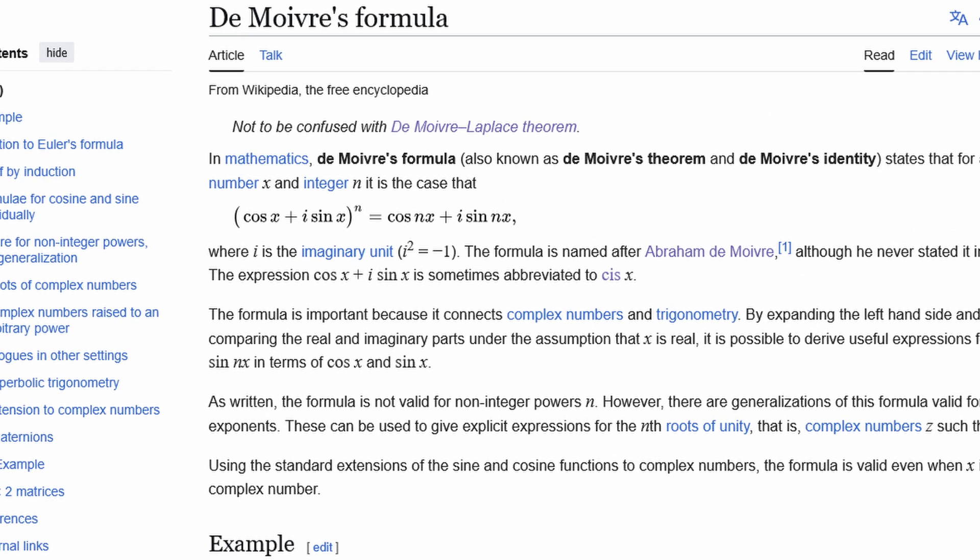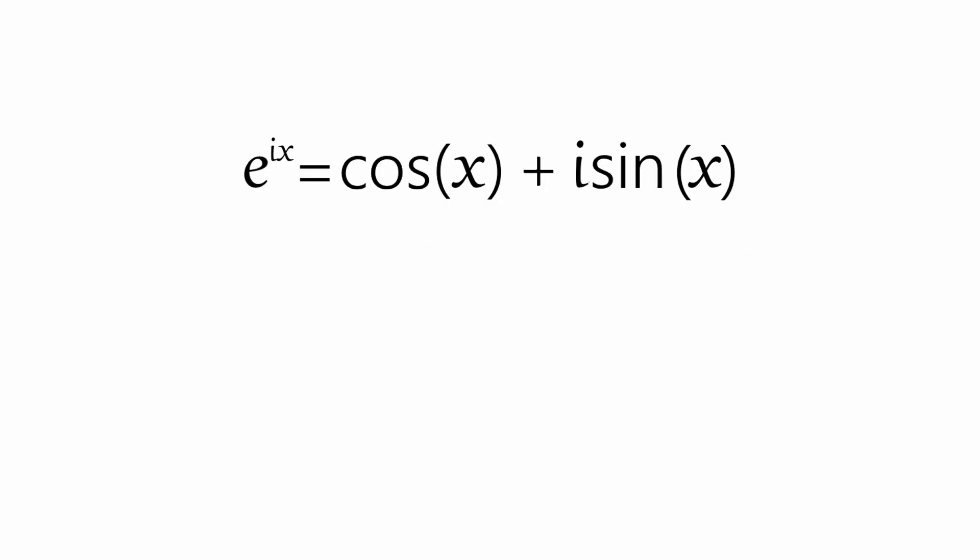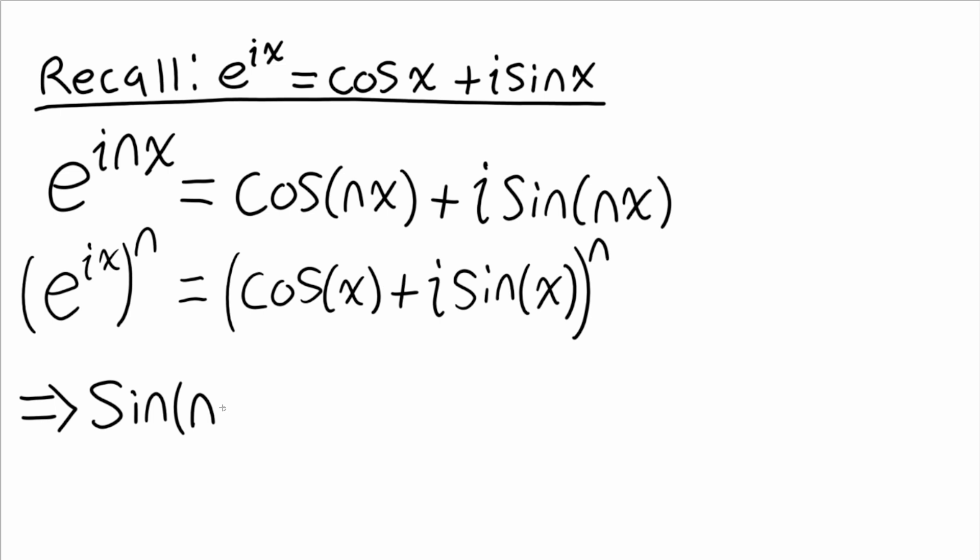Now typically the statement is formulated like this, but for our purposes, we're going to focus more on the sine term. In Euler's formula, the cosine term is the real part, and the sine term is the imaginary part. What this means for us is that i sine of nx is the same thing as the imaginary part of the binomial expansion of cosx plus i sinx raised to the n power.